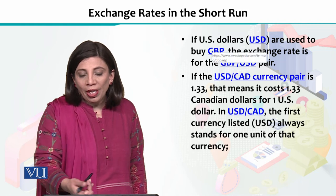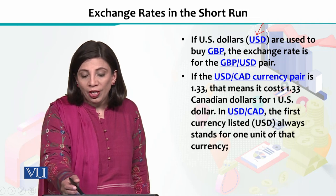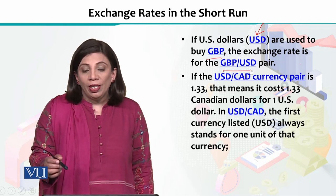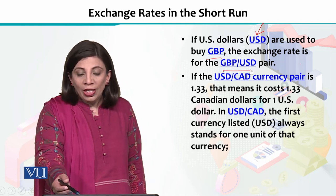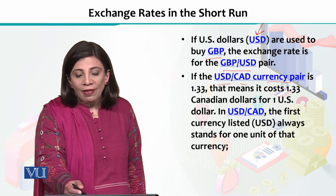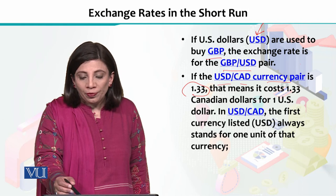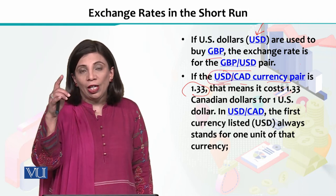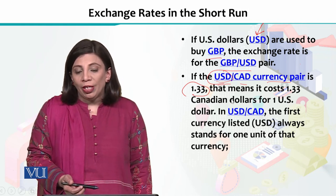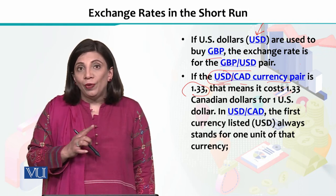If we represent US dollars as USD — this is international notation — and GBP is the British pound, then the exchange rate will be GBP over USD. Similarly, USD divided by CAD means Canadian dollar. If we write this currency pair with a value of 1.33, the currency in the numerator is always written as 1, so 1 USD equals 1.33 CAD. This is how we read it.